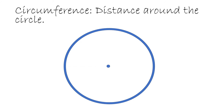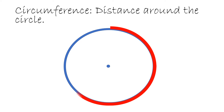Circumference is the distance around the circle. So here we have a circle. We're going to start from the top and watch the distance — it's all the way around from the starting point back to the starting point. This is the circumference.